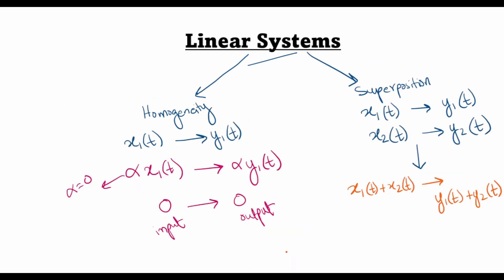Whenever you are not sure whether a system is linear or not, you have to go back to the definition and check if the system conforms to the principles of homogeneity and superposition, and then you can characterize it as a linear system. So that's it for today — see you in another lecture.